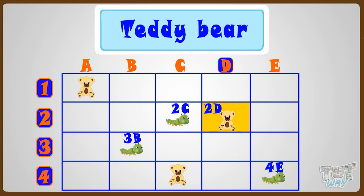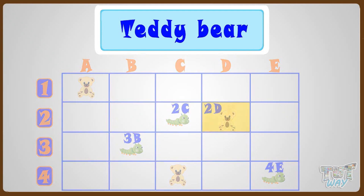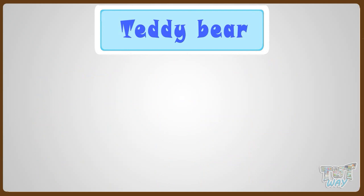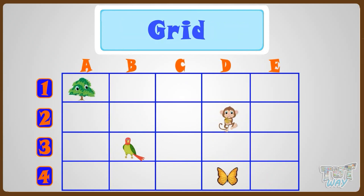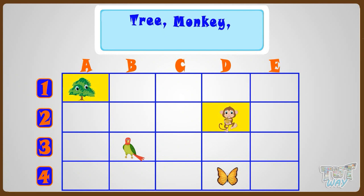So kids, now let's move to another example. Here is another grid showing the position of four things: a tree, a monkey, a parrot, and a butterfly. Now let's answer a few questions based on this grid.